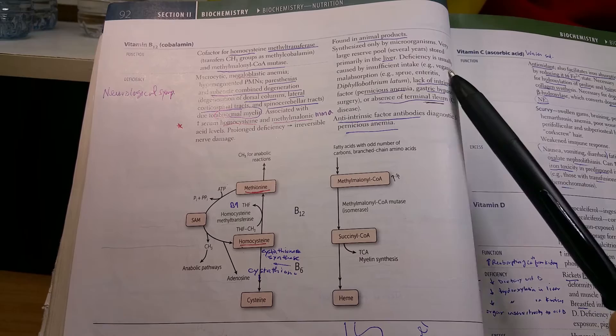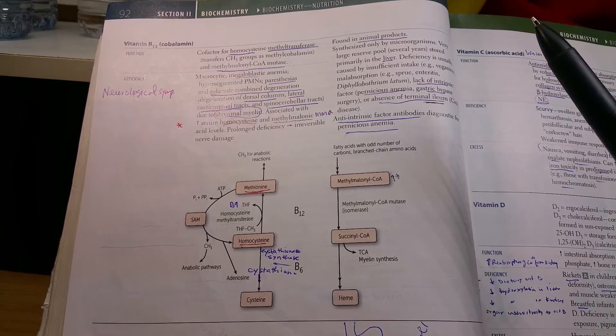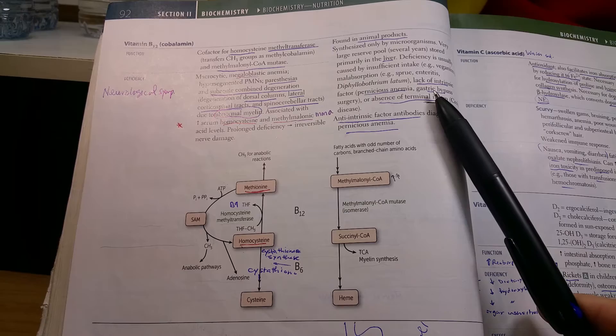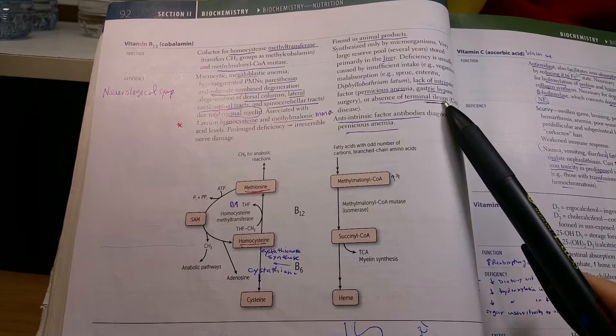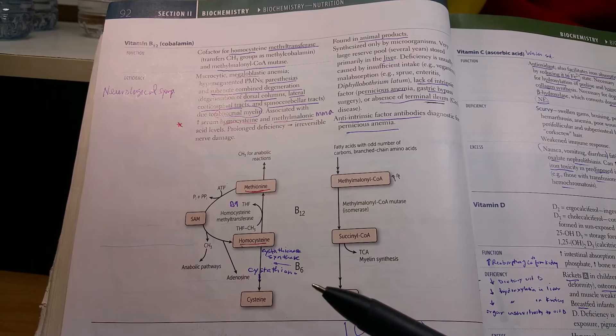Deficiency usually arises when somebody is vegan with insufficient intake, or from malabsorption, or lack of intrinsic factor. Intrinsic factor is produced by the parietal cell and is very important for absorption. Lack of intrinsic factor occurs in pernicious anemia, or removal of the part that has parietal cells like gastric bypass, or the terminal ileum which is the site of absorption. These all cause deficiency. We use anti-intrinsic factor antibodies to diagnose pernicious anemia.